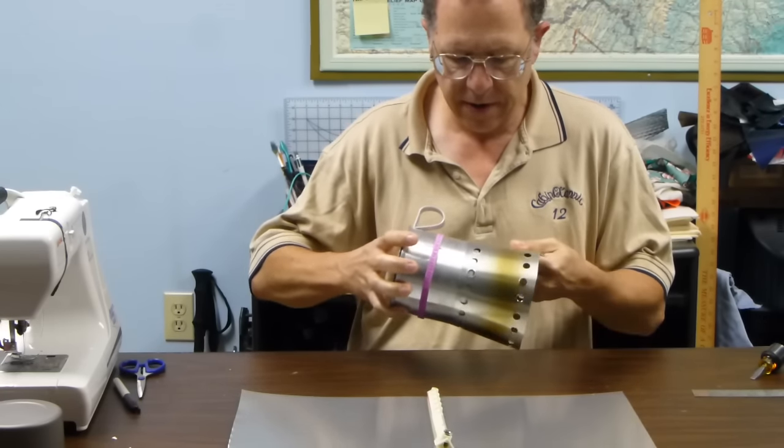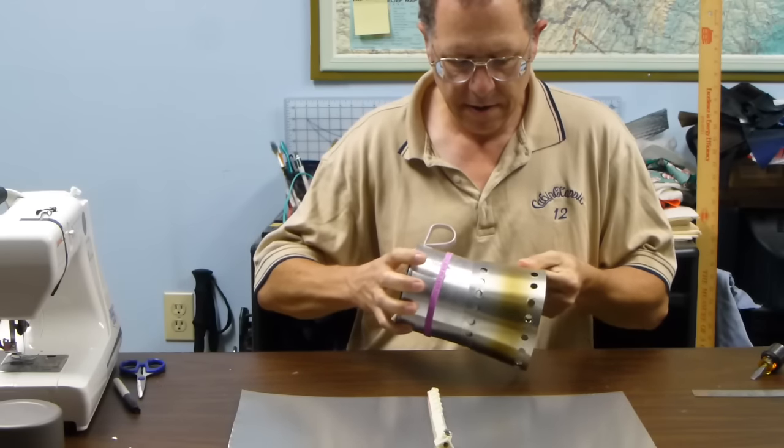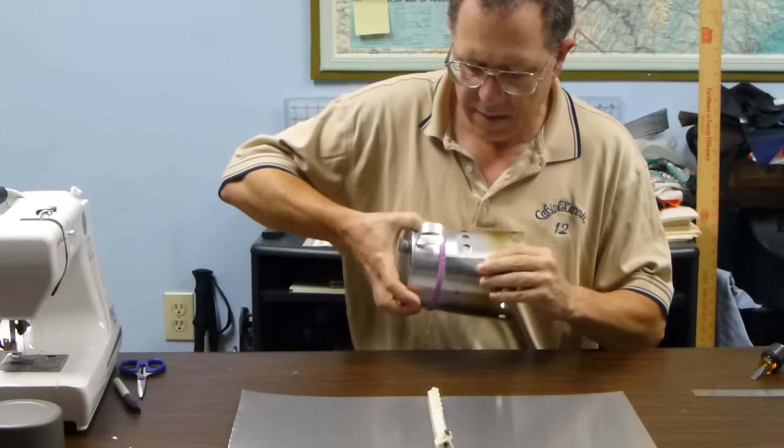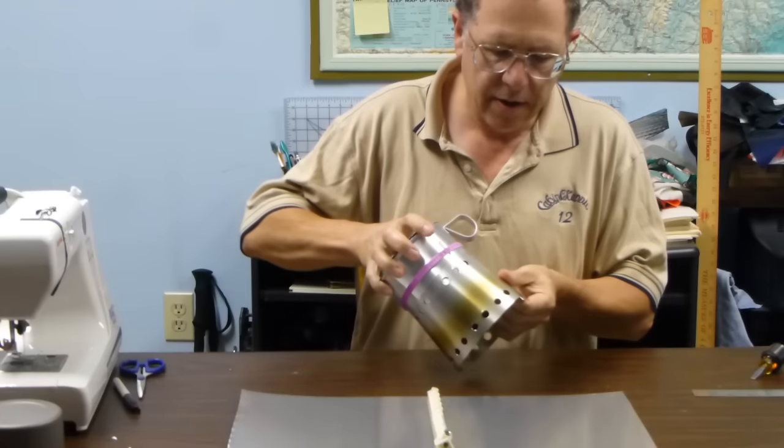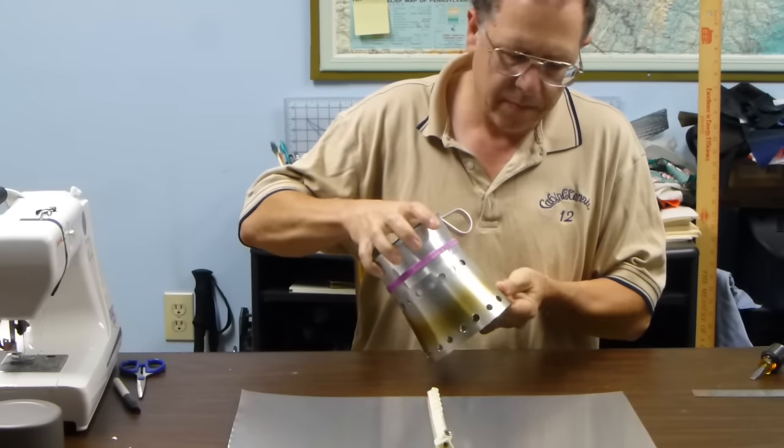I'm trying to get it around the bottom rivet here. Shift it off a little bit and then I can get it past that bottom rivet. Line it back up to square.